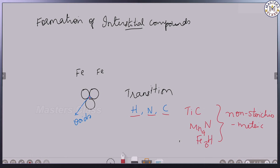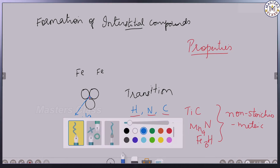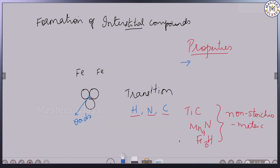Small atoms cause the properties of transition elements to change. Like alloys, the properties of pure metal are changed. So any properties change? Interstitial compounds do form metallic bonds, and interstitial elements will show very high melting point.